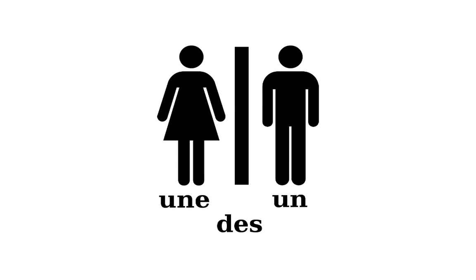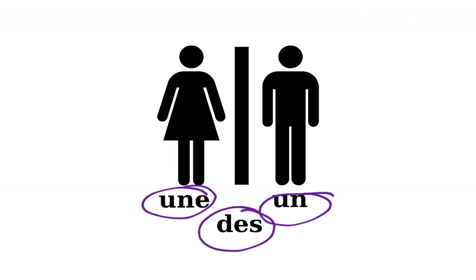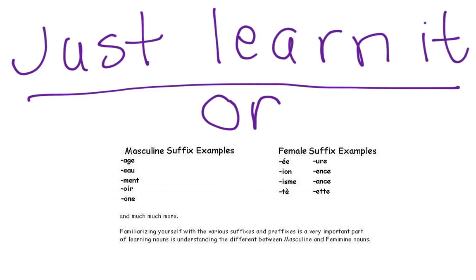So this just gives you a little visual here. Une is feminine, un is masculine, and des is plural — it ends in 's,' just like an English plural word. Des means 'some,' and you can use that for a group of things or people that are all masculine, all feminine, or mixed.